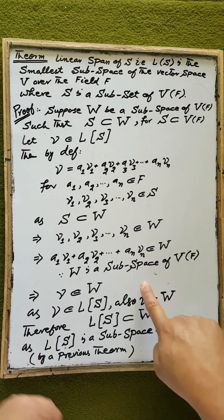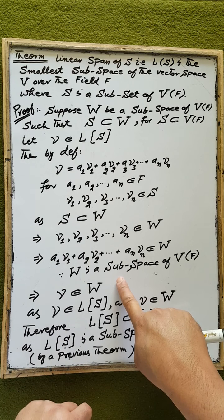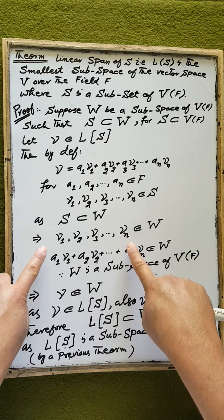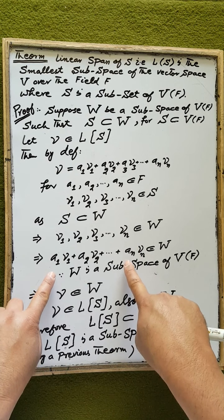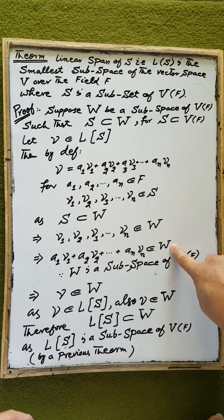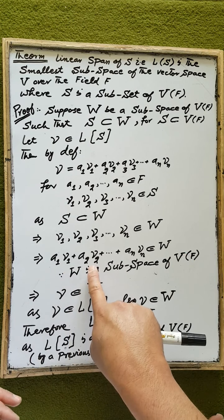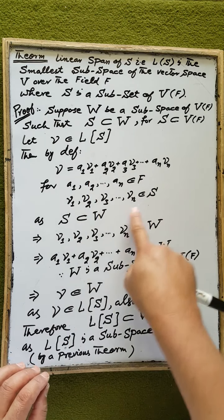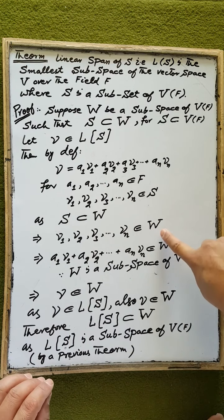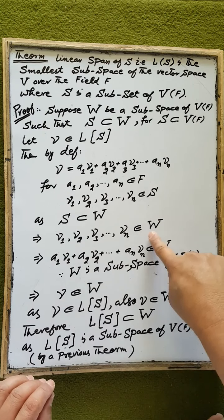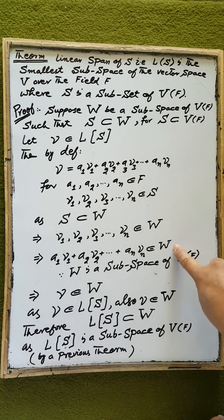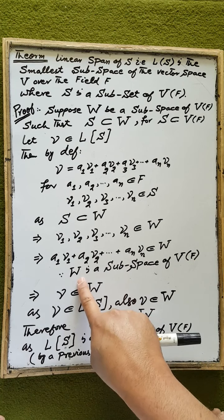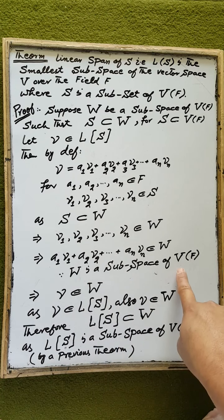According to the condition of a subspace of the vector space V over the field F, the linear combination of elements of W is also an element of W. That is, A1·V1 + A2·V2 + ... + An·Vn, which is the linear combination of elements of S, is an element of W. This resultant element is again an element of W according to the definition and conditions of a subspace of V over F.